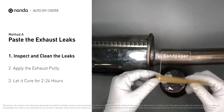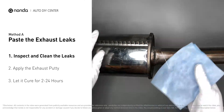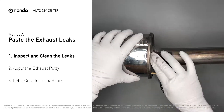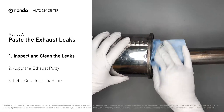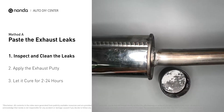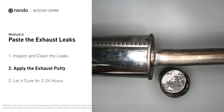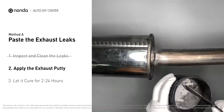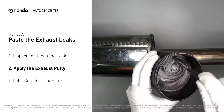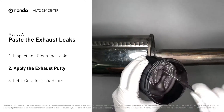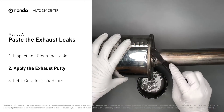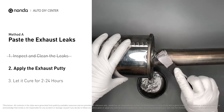First, get sandpaper and a wet wipe to clean the leaking area for better application. Stir the paste well to activate it, then apply and press the paste to seal the leaking area.